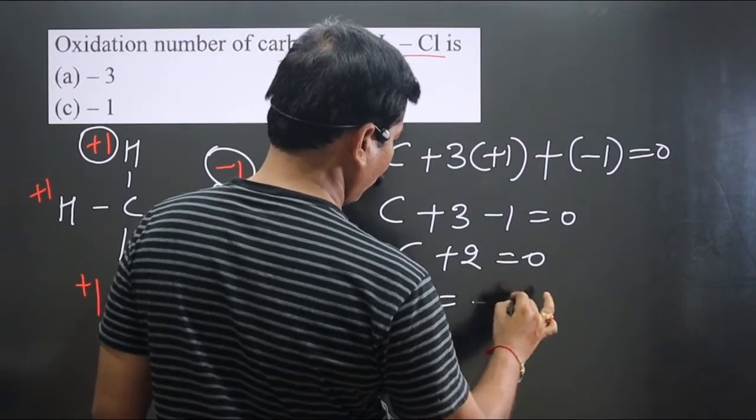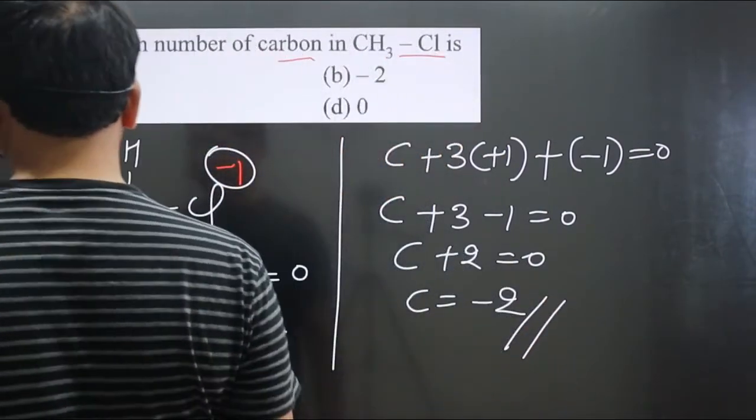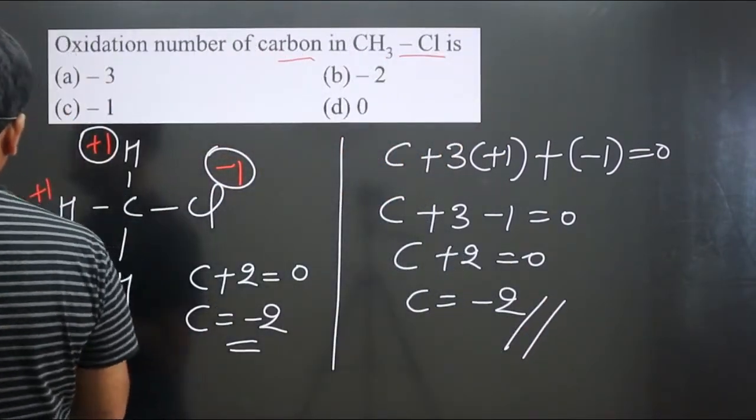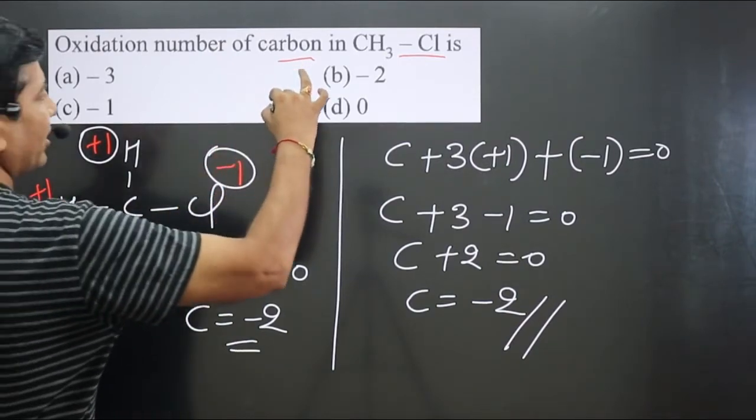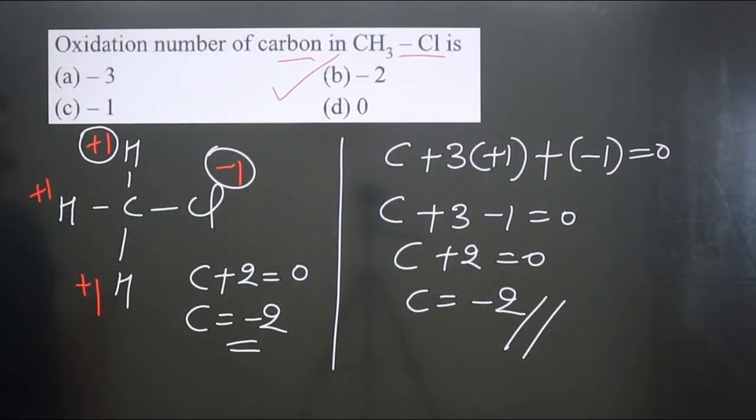Carbon is equal to -2. This way also we get carbon = -2. Therefore option B is correct.